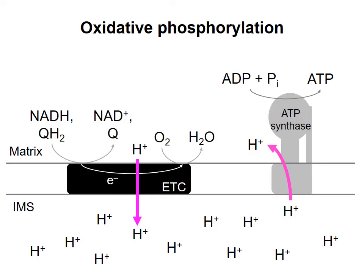But ATP synthesized in the mitochondrial matrix is not much good to the rest of the cell if it cannot leave the matrix. Likewise, we need a way to get ADP and phosphate into the matrix so they can be combined to make ATP. I'll now describe how ATP leaves the matrix and ADP and phosphate get in.